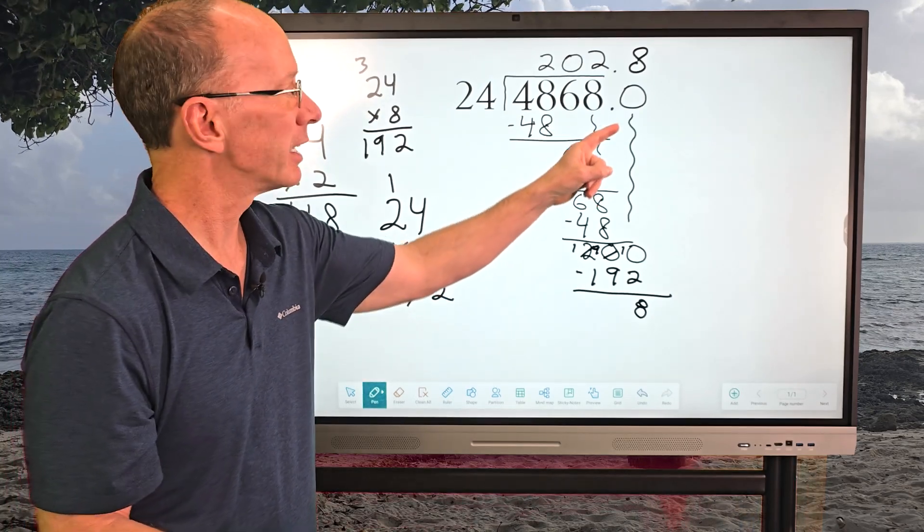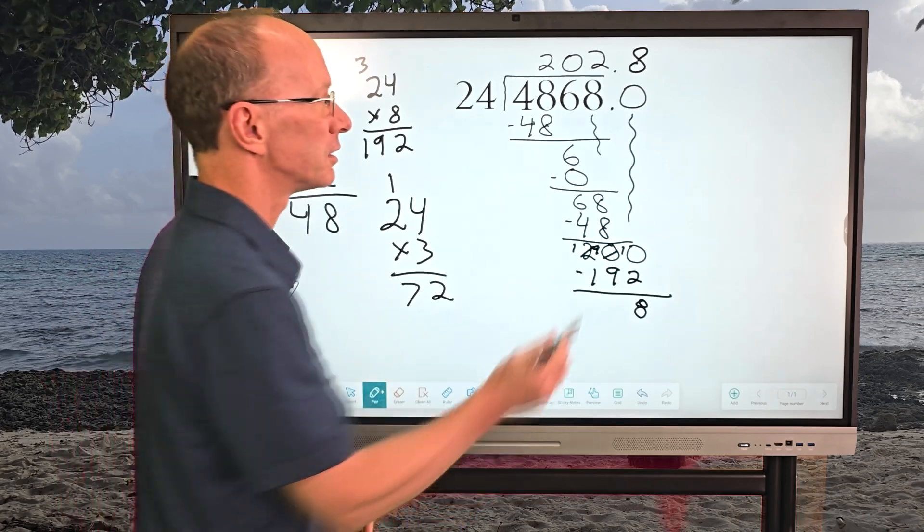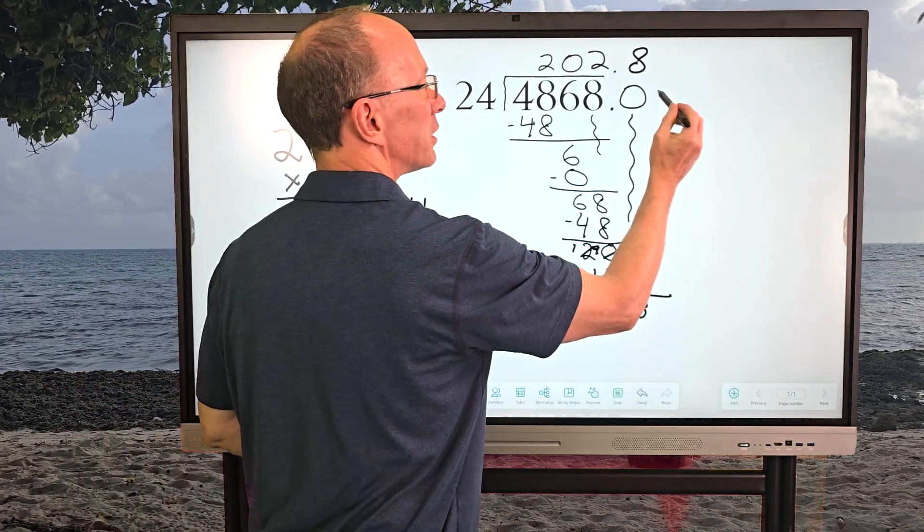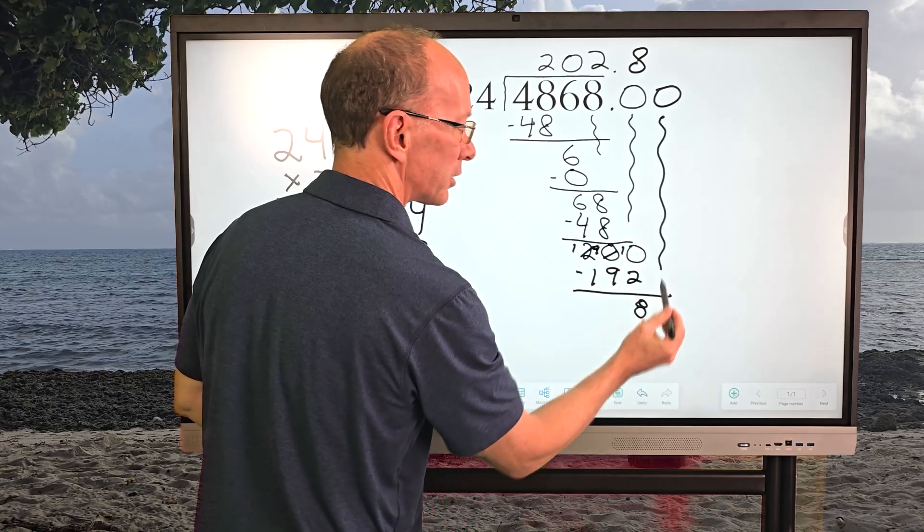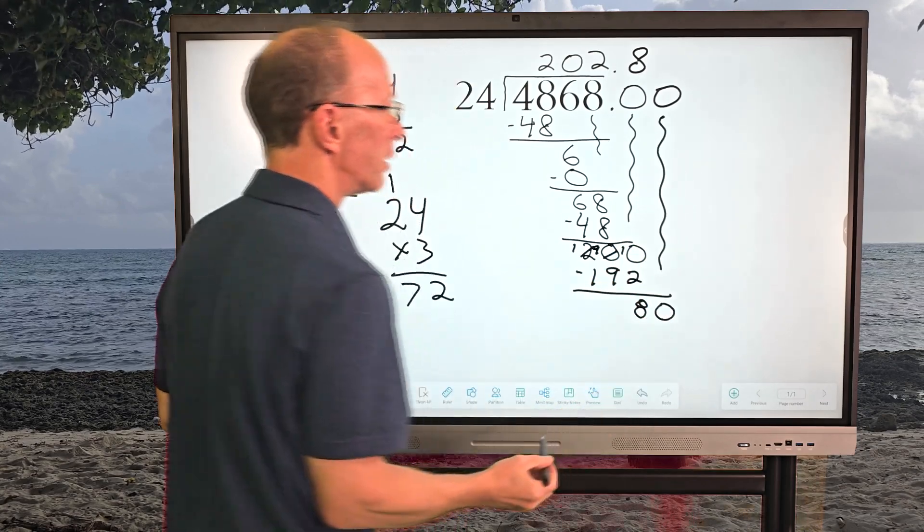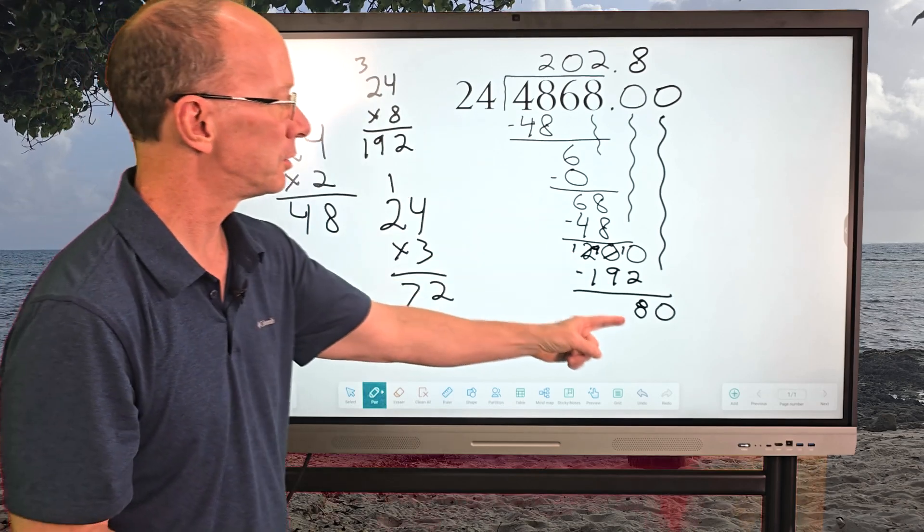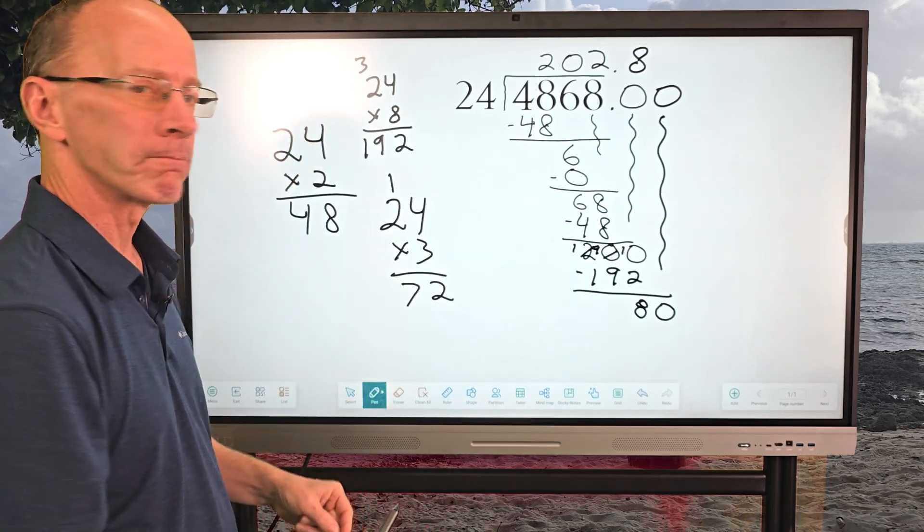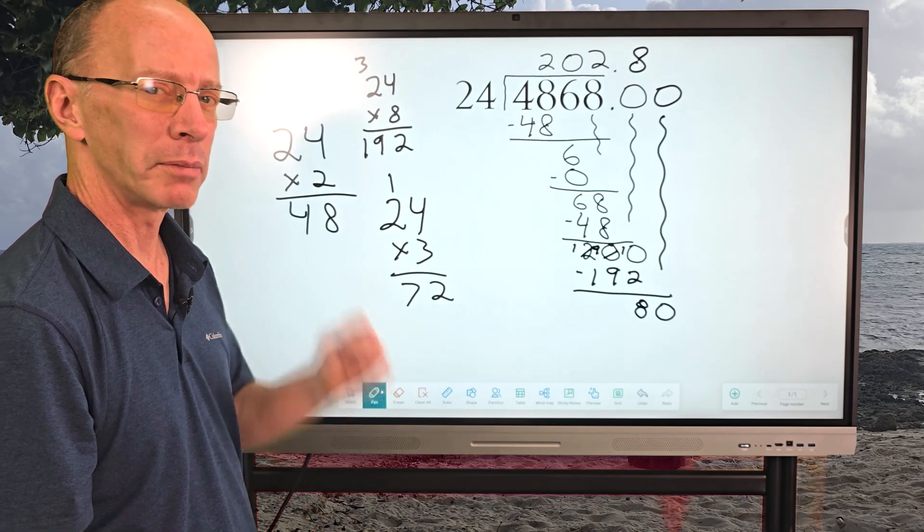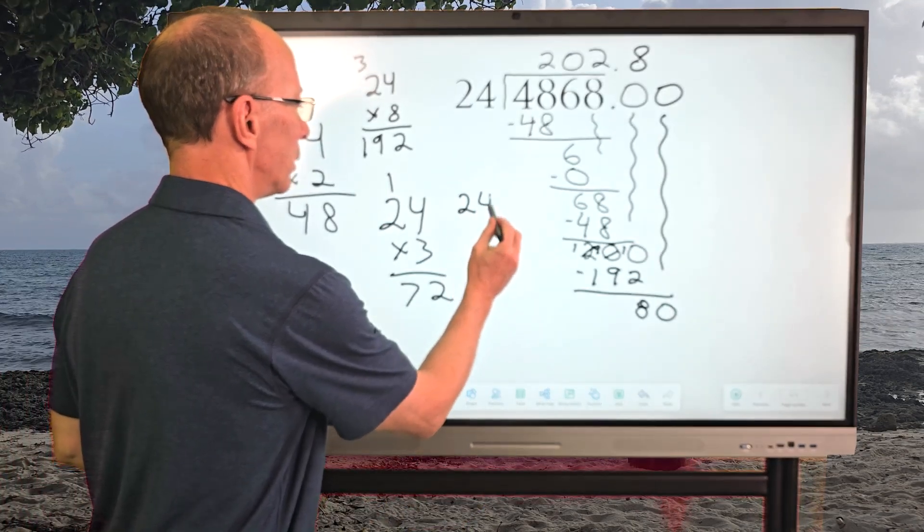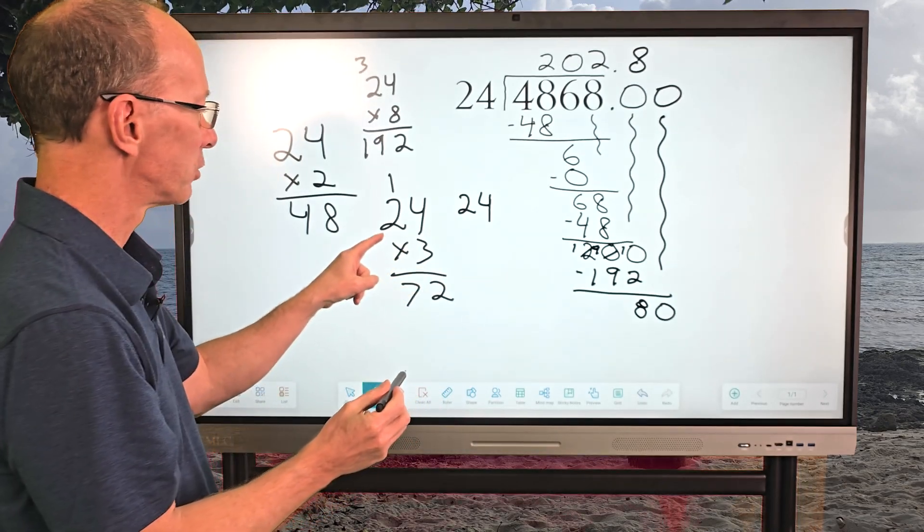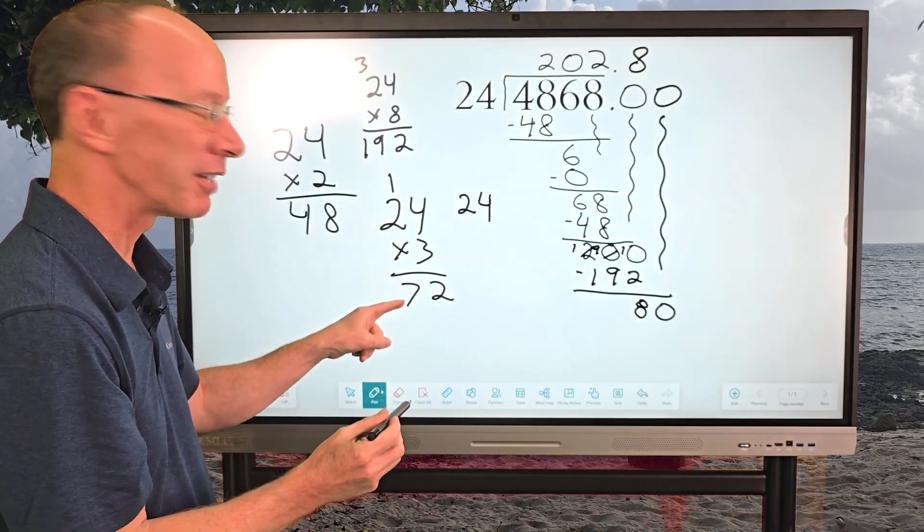Now, again, I can bring down another 0. Remember, I can add as many 0s as I want here. It's not going to change the value. So I'm going to bring this next one down here. That's another 0. How many times can I put 24 into 80? Hmm. What do you think? I'm thinking maybe 3 times. Let's put a little, oh, we already did that right here. So 24 times 3 would be 72.